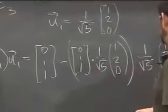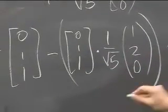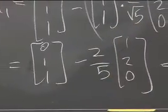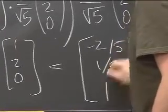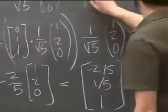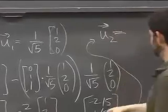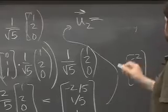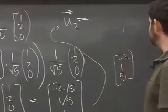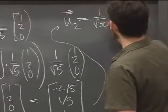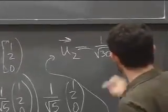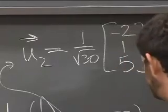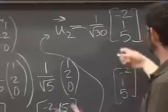Computing v₂⊥: we have (0, 1, 1) minus (2/5)(1, 2, 0), giving (−2/5, 1/5, 1). A trick: instead of normalizing this messy vector, multiply by 5 to get (−2, 1, 5), whose length is √(4 + 1 + 25) = √30. So u₂ = (1/√30)(−2, 1, 5).